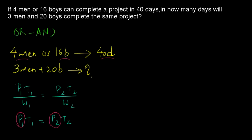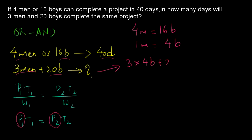To keep both in the same units, we find boys in terms of men. Since 4 men = 16 boys, we get 1 man = 4 boys. Now substituting: 3 men + 20 boys = 3×4 boys + 20 boys = 12 boys + 20 boys = 32 boys.